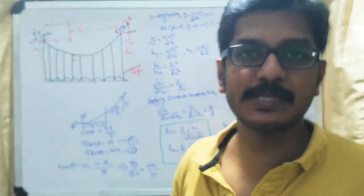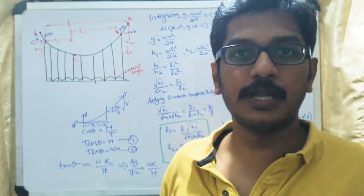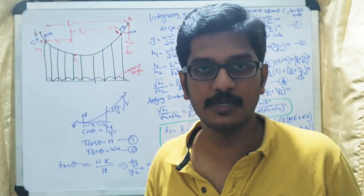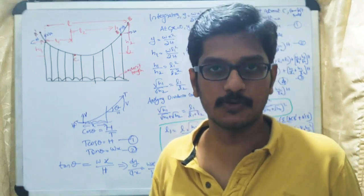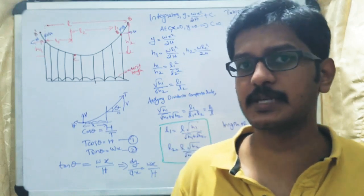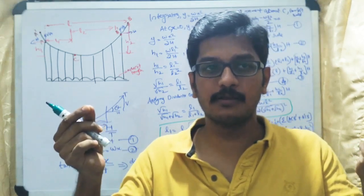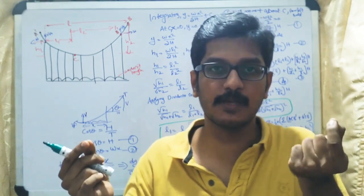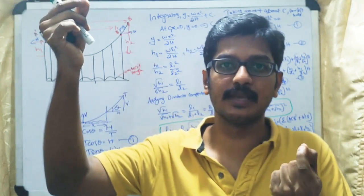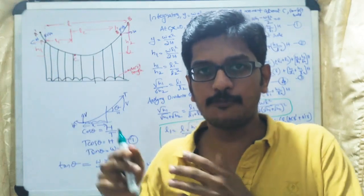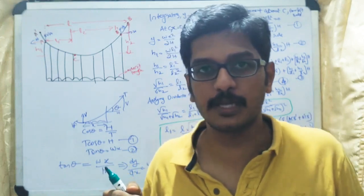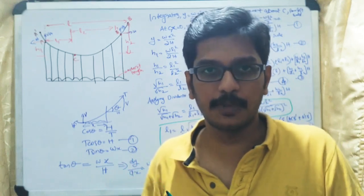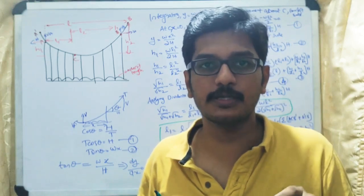Welcome to another video lecture. Today we will discuss the analysis of a cable when the ends are at two different levels. I hope all of you have watched the previous section related with cables — please go back and watch to understand the concepts. In the previous sections we considered the cable with both supports A and B at the same level. In this section we will discuss the case where support A and support B are at different levels. The final equation is very important in this topic.